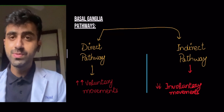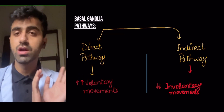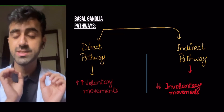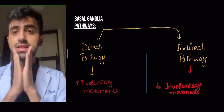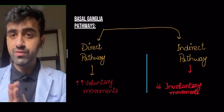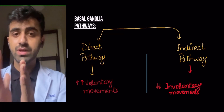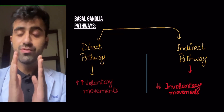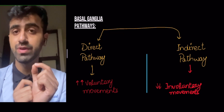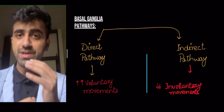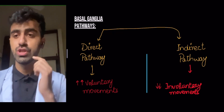Before we start with anything else, like I did in my levodopa and carbidopa video, I'm going to explain some basic concepts. The basal ganglia pathways are divided into the direct pathway and the indirect pathway. The direct pathway controls voluntary movement in your body, while the indirect pathway inhibits all involuntary movements.